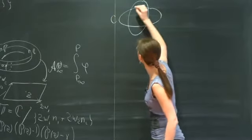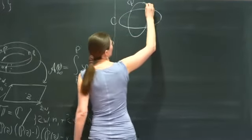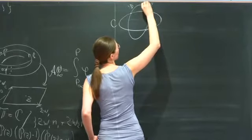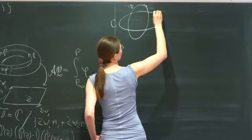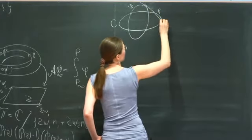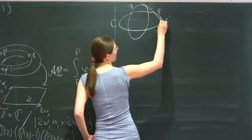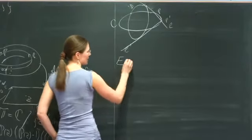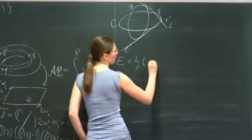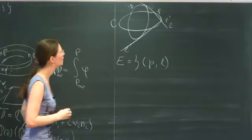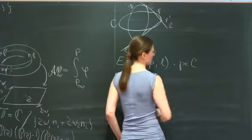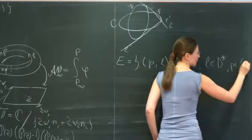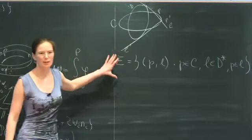If you take two conics — two quadrics in the complex projective plane — they will intersect in four points. I'll call them conic C and conic D. Taking a point P on conic C and sending a tangent line to D, it intersects conic C at a point P′, through which we send the next tangent. We define a set E of pairs: a point on conic C and a tangent line to D going through that point.